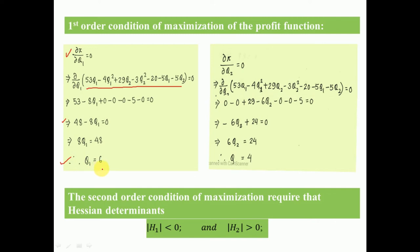Solving gives q1 = 6, so the profit-maximizing output in market 1 is 6. Now differentiating the profit function with respect to q2 and setting it equal to 0 gives 29 − 6q2 − 5 = 0, which simplifies to 24 − 6q2 = 0, giving q2 = 4. The profit-maximizing output in market 2 is 4.